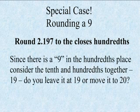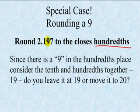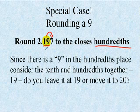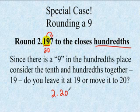When rounding nines, round 2.197 to the closest hundredth. Our hundredths place is our nine. Since there is a nine in the hundredths place, we have to consider the tenths and hundredths places together — as the number 19. Looking next door, our seven will tell 19 to stay 19 or change to 20. Because our seven is five or more, it becomes 2.20.